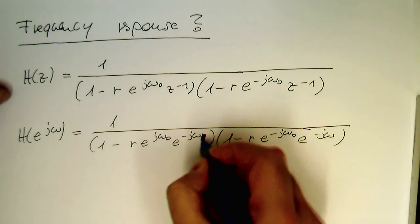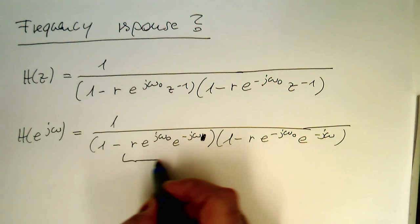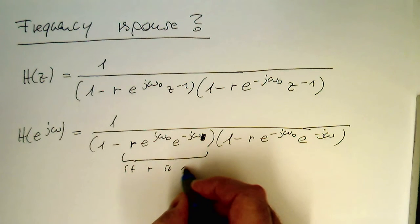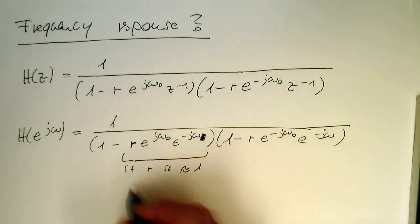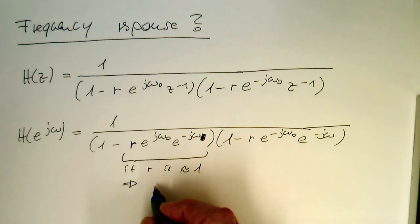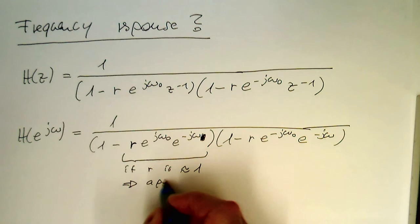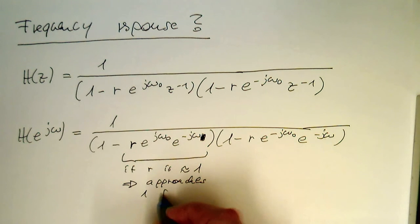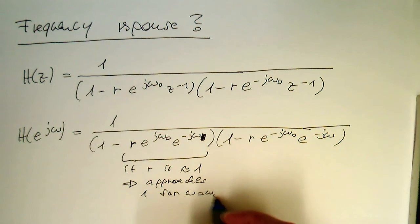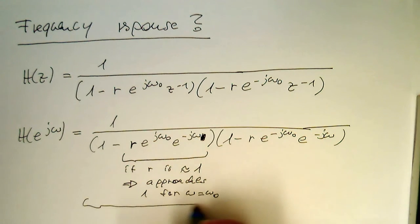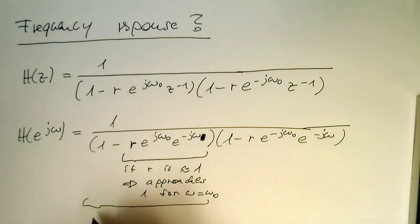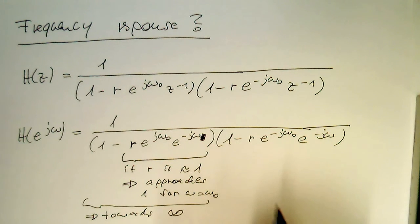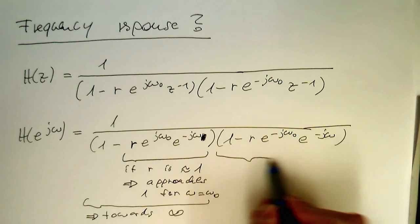If r is not omega 0, this is omega 0, this is omega. If r is nearly 1, then this means that this term here approaches 1 for omega equals omega 0. So this means that the whole term here goes towards infinity. So the same applies obviously for the other side here.